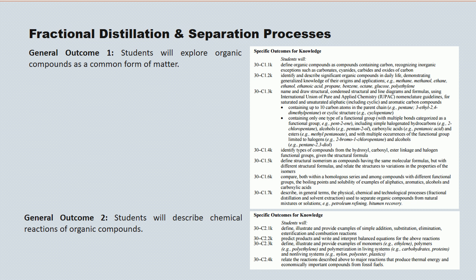In terms of Chemistry 30, these are the knowledge outcomes prescribed by Alberta Learning. They form the basis for your diploma exam and they're the knowledge areas that the province wants you to master. Hopefully you've been referring back to this page from time to time to gauge how well your understanding of the material is progressing.